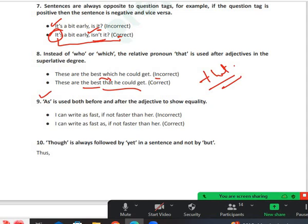'As' is used both before and after the adjective to show equality. When adjective comes with 'as' before it, then 'as' will also come after it because it shows equality. For example: I can write as fast, if not faster than her. Is it clear? Okay.